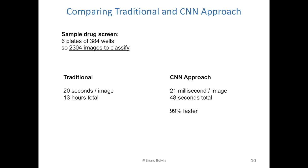So our system would capture one image for each of these chambers for us to classify. The traditional approach used by scientists to manually classify these images includes loading the image to screen, determining whether most worms are dead or living to make a classification decision, and writing down that classification. Assuming all that takes about 20 seconds per image, it would take about 13 hours to complete this classification task.